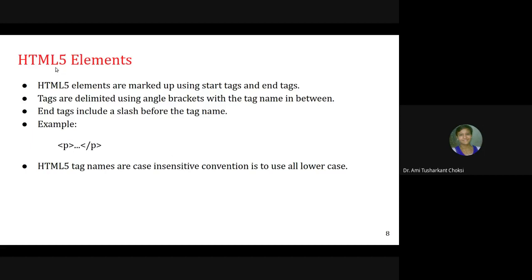HTML5 elements are marked up using start tags and end tags. Tags are delimited using angle brackets with the tag name in between. End tags include a slash before the tag name; start tags do not have a slash.